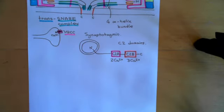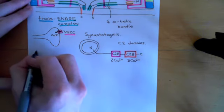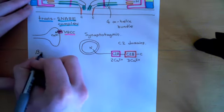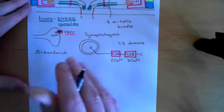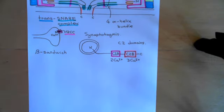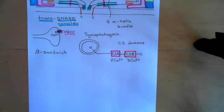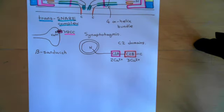C2 domains have a structure known as a beta sandwich. I should stress that these are not just domains you find in synaptotagmin — synaptotagmin is one of the prototypical examples. But there are other important examples of proteins with C2 domains, notably the protein kinase C enzymes — at least many protein kinase C enzymes have C2 domains. So it's a domain structure that you can find in many different proteins.